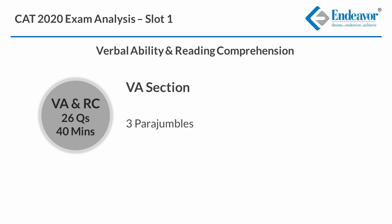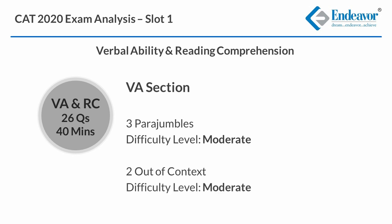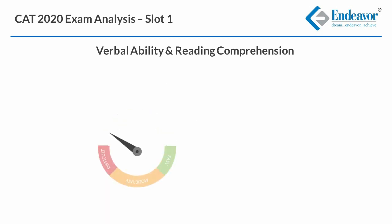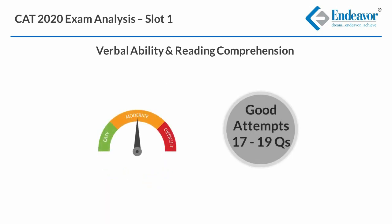There were also 3 para jumbles with 4 sentences each, which can be termed moderate again because the language was not difficult. Overall, the VA sectional was easier in comparison with the RC sectional and had 5 non-negative key-in questions. Good attempts for VARC can be regarded as 17 to 19 questions.